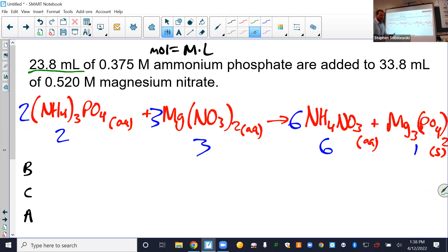Notice we're given milliliters. We need to turn that into liters by dividing by 1,000. This gives us 0.0238 liters and 0.0338 liters. We're going to multiply each of those by their molarity to get moles of our starting reactants. 0.0238 liters times 0.375 gives us, with three sig figs, 0.00893. And for our second one, 0.0338 times 0.520 gives us 0.0176. So that's our starting moles.